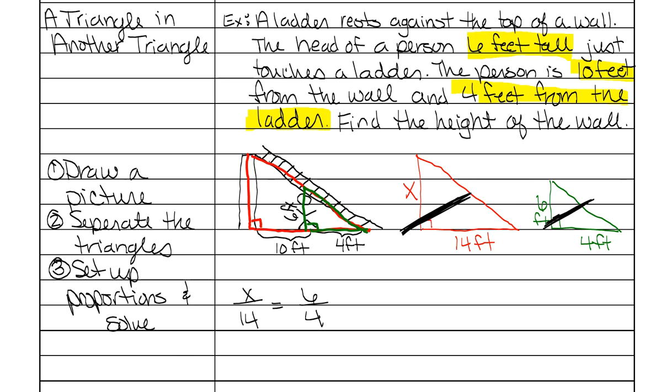Then you just cross multiply and solve. So some people have called this the butterfly because you look at it like this. 4 times x. 4 times x is just 4x. And then you multiply these. So 6 times 14. And 6 times 14 is 84. Then you just solve this simple equation. Divide 4 on both sides. And x is 21.